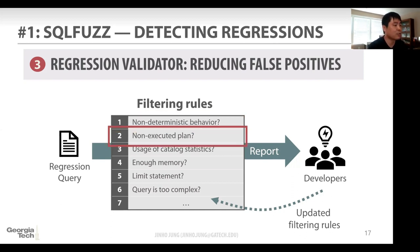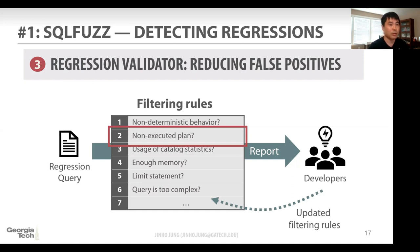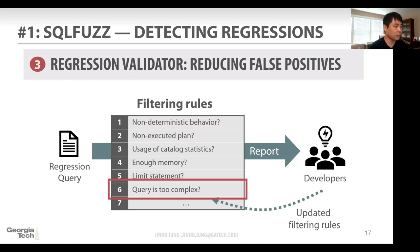Another interesting case is the non-executive plan. There is a query using a subquery, and the old and newer version DBMS take different run paths in the optimizer. The old version returned nothing from the subquery, but the newer version returned several tuples. Because the older version returned nothing, it executed fewer run paths; but the newer version executed more paths because the subquery returned something. In this case, the developer clarified this is not a bug — it's an inherent behavior of the DBMS. So we also discard any case with a non-executive plan. We also check whether the query is too complicated and discard those.